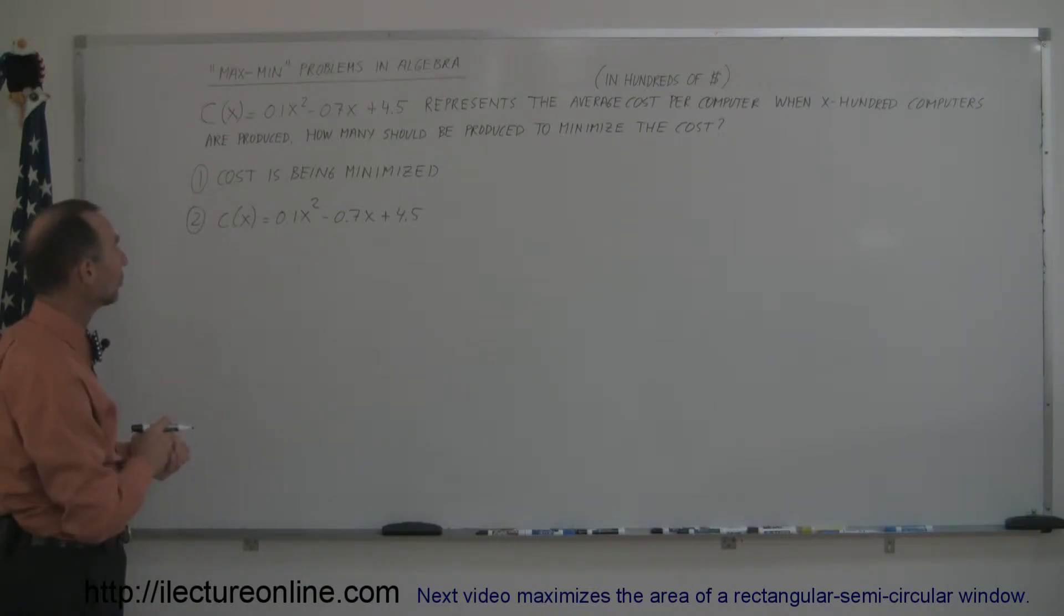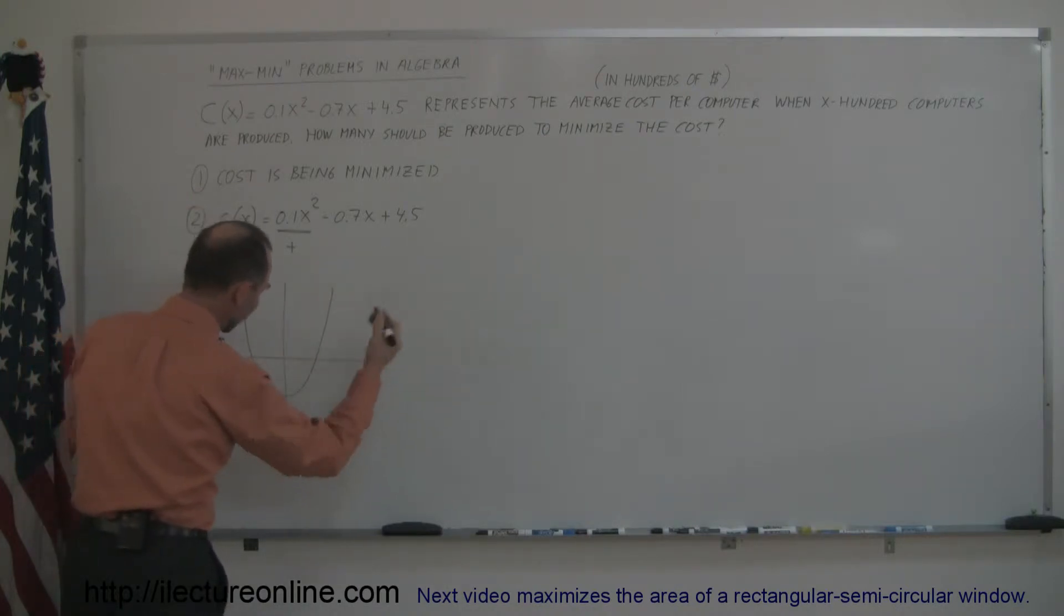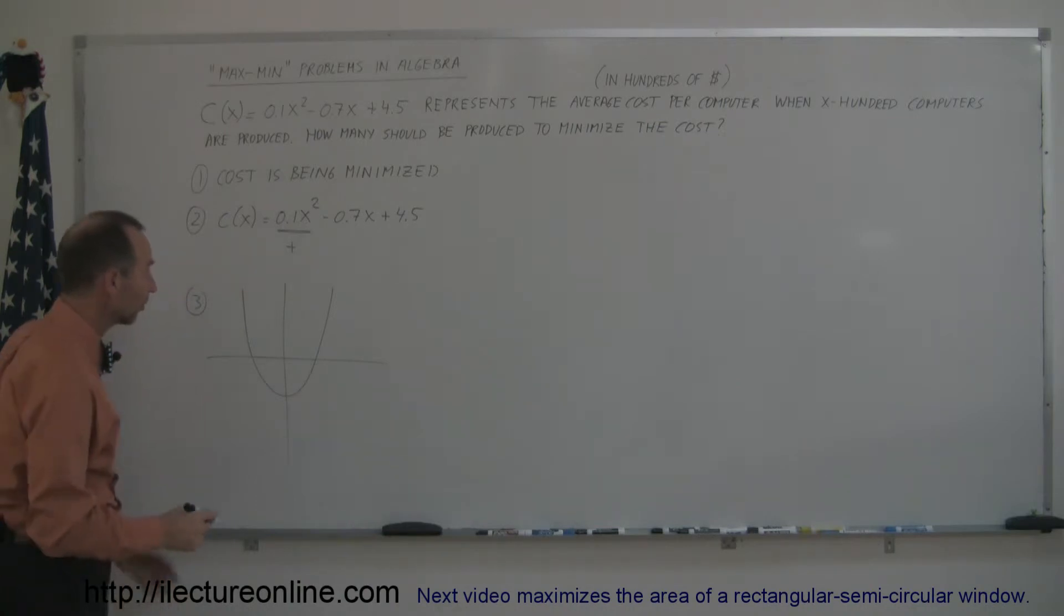The next thing to do is to realize that we're dealing with a quadratic equation, which is represented by a parabola if we draw this graphically. And since the x squared term is positive, we can then see that the parabola will open upward like this. And it'll be somewhere on the x-y axis, doesn't matter where, we just have to realize it opens upward.